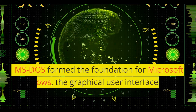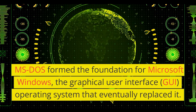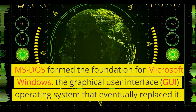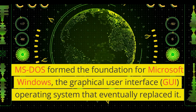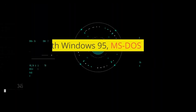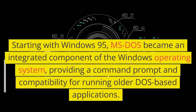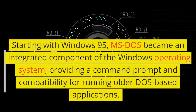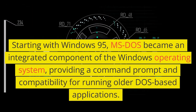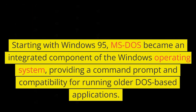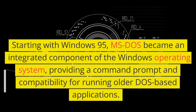MS-DOS formed the foundation for Microsoft Windows, the graphical user interface operating system that eventually replaced it. Starting with Windows 95, MS-DOS became an integrated component of the Windows operating system, providing a command prompt and compatibility for running older DOS-based applications.